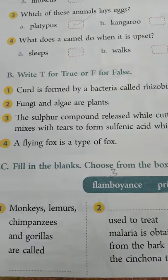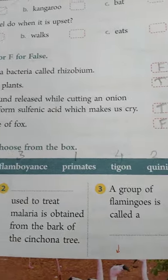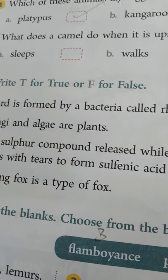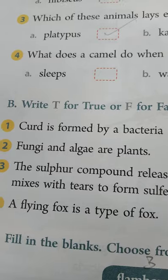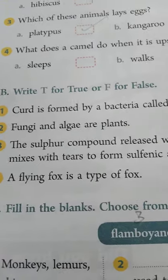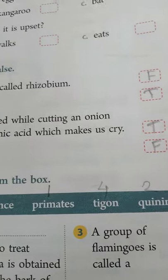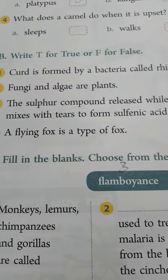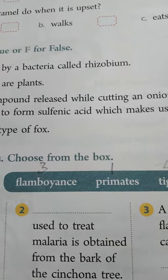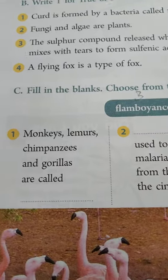Write true or false. First: curd is formed by a bacteria called rhizobium — it is false. Rhizobium is a root bacteria; curd uses a different type of bacteria, which will be discussed in the next class. Second: fungi and algae are plants — true. Third: the sulphur compound released while cutting an onion mixes with tears to form sulphanic acid which makes us cry — true. Fourth: a flying fox is a type of fox — that is false.